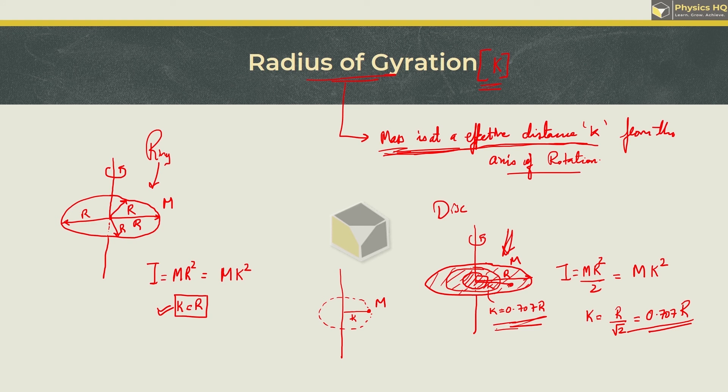So it comes out to be 0.707 times r, and this is the best method to find out radius of gyration for any shape.